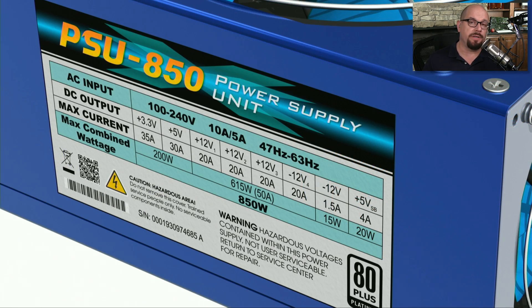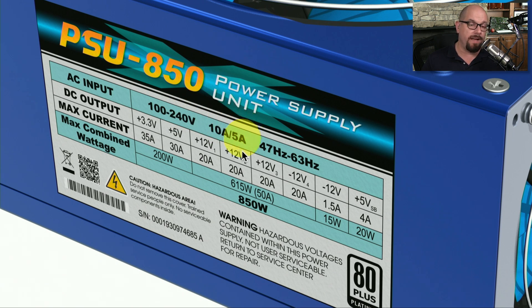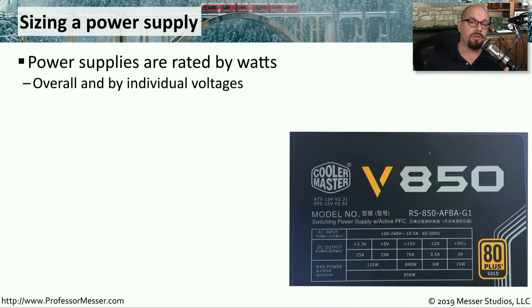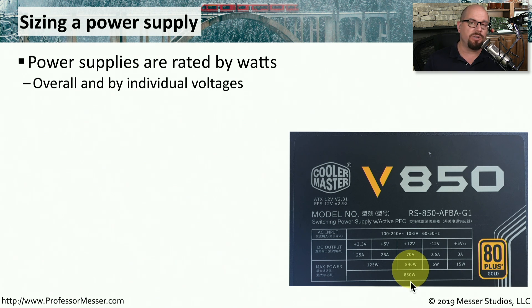Here's a good example of power characteristics on a power supply. This one supports 100 to 240 volts of AC input, so it will work in any country. It requires 10 amps or 5 amps of input depending on the voltage, and supports 47 to 63 hertz of frequency. The DC output includes 3.3 volts, 5 volts, multiple 12-volt rails, a negative 12 volt, and a positive 5-volt standby. Power supplies are rated by wattage — this particular one supports 850 watts overall, with separate wattage limits for each voltage rail.